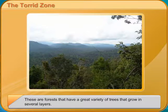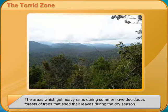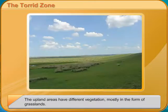The upland areas have different vegetation, mostly in the form of grasslands. The deserts have thorn forests. More than half of all the species of animals, birds, fish, and insects in the world are found in this region.